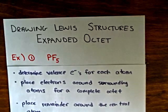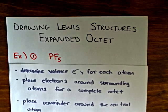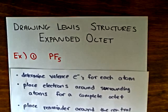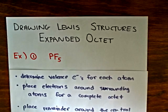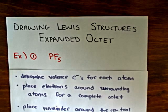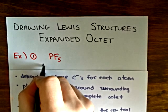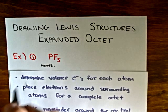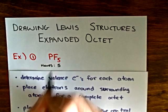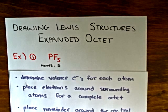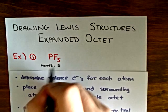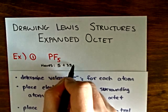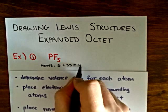If we want to draw phosphorus pentafluoride, we know that phosphorus will have an expanded octet. The first thing I like to do is determine the number of valence electrons that each atom in the species will have in its ground state. In its ground state, phosphorus will have five valence electrons and fluorine will have seven. There are five fluorines, so that will be 35 electrons. Adding those together gives us 40 electrons.